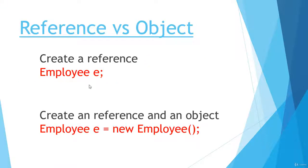First of all we compare reference with the object. When you put your class name and after that you type the reference variable — like here I have written 'e' — then this is called creating a reference. And when you want to create an object you use the new operator, like: employee e = new employee(); and this whole statement creates an object for you.